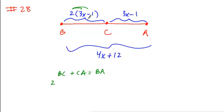And so if we distribute this through, we get 6x minus 2 plus 3x minus 1 is equal to 4x plus 12. And we can just solve this. Combining like terms,